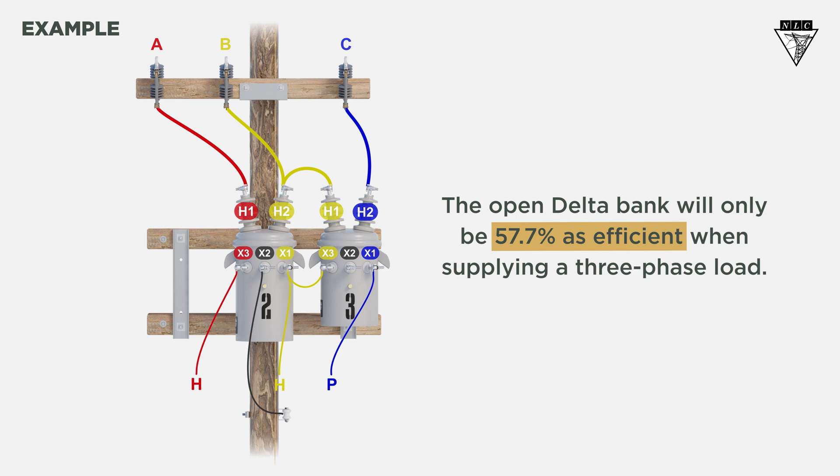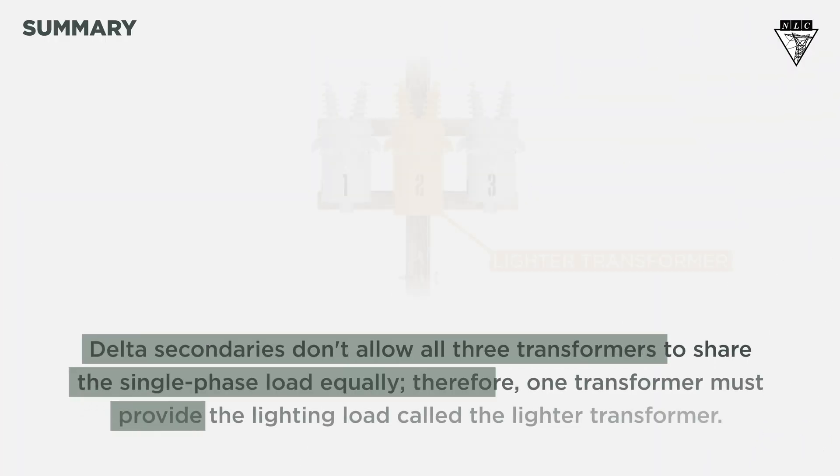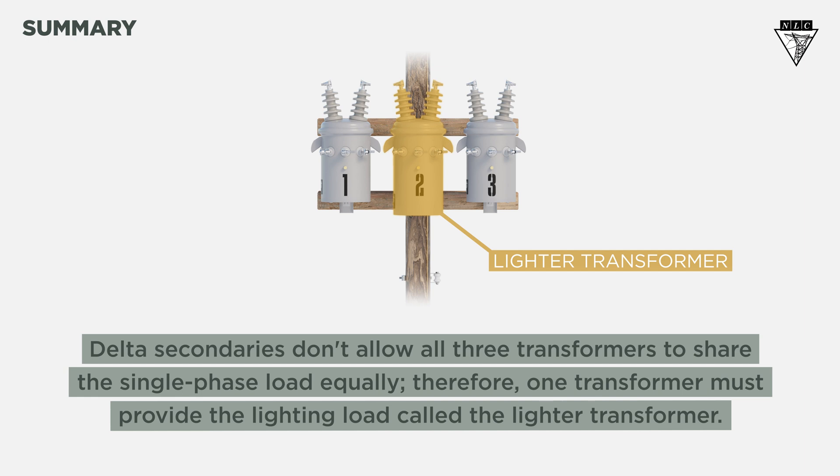So, what did we learn? Delta secondaries don't allow all three transformers to share the single phase load equally. Therefore, one transformer must provide the lighting load, called the lighter transformer.